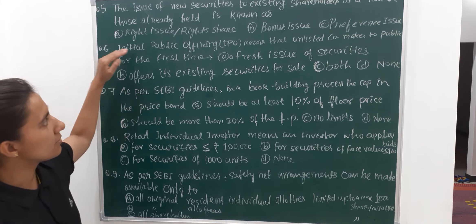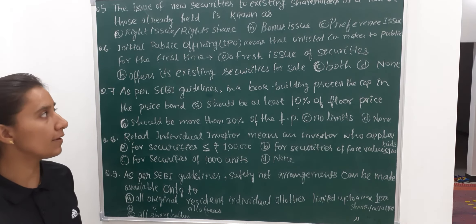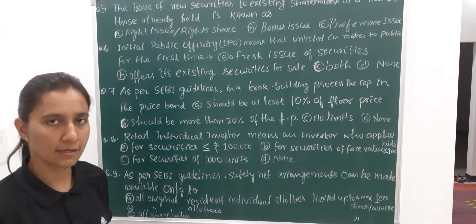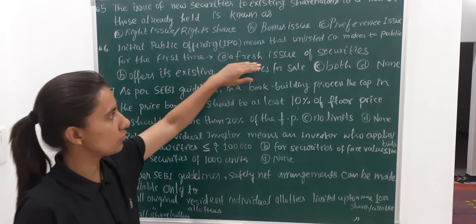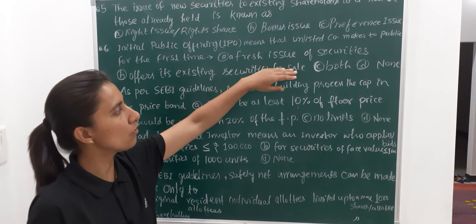Next question: IPO, that is initial public offering, means that an unlisted company makes to the public for the first time — A a fresh issue of securities, B offers its existing securities for sale, C is both, D is none. The correct answer about IPO is a fresh issue of securities for the first time.